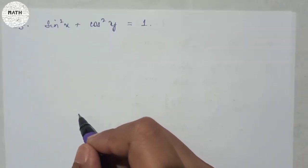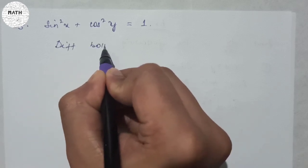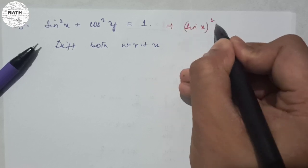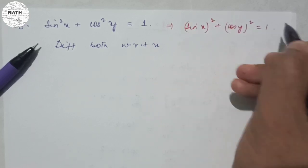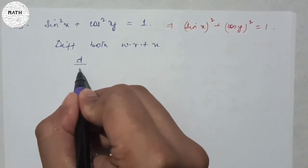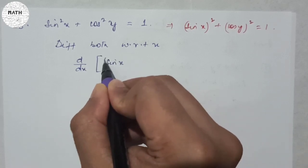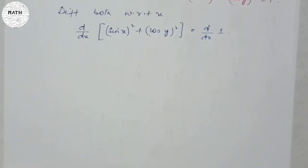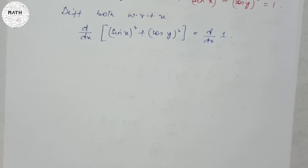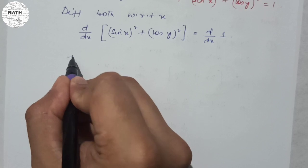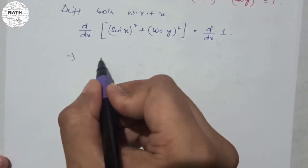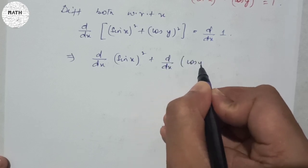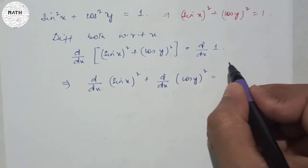Question number 8: sin²x + cos²y = 1. Differentiating both sides with respect to x: d/dx of (sin x)² + d/dx of (cos y)² = d/dx of 1. The constant 1 differentiates to zero. Consider sin x as a variable; d/dx of (sin x)² = 2 sin x · d/dx of sin x. Similarly for (cos y)².